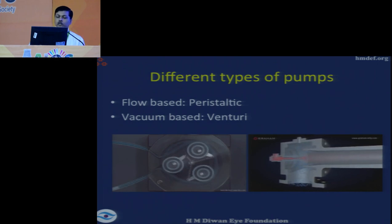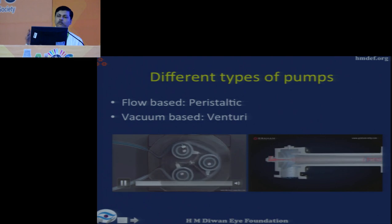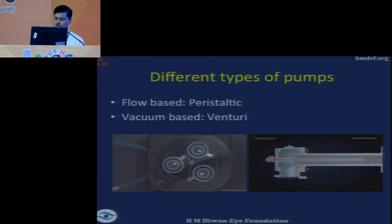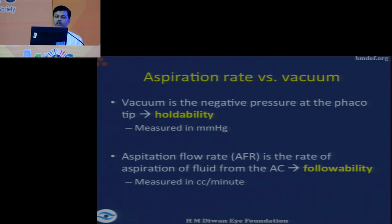There is a basic inherent turbulence built into peristaltic machines, especially at lower aspiration flow rates. Vacuum determines the holdability of the nucleus — once you have impaled the nuclear bit, how well it will be held and how little chatter there will be. The aspiration flow rate determines followability — if you are static at one point, how fast the nuclear bits will come to the phaco probe. Rise time is like a car going from 0 to 60 in 5 seconds; it determines the speed at which you can increase the vacuum in your phaco machine.